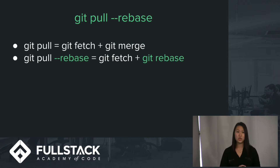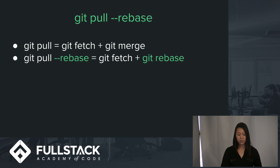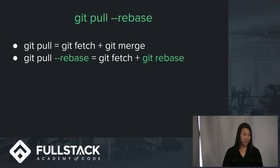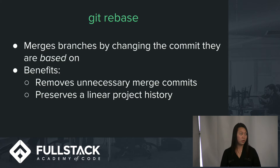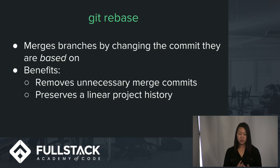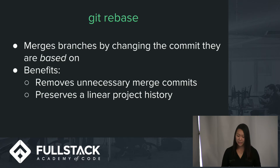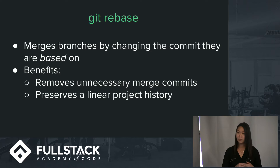When you do a `git pull`, it actually does two commands: `git fetch`, which downloads changes from another repository, and then `git merge` with your own branch. But if you use the rebase option, you do a `git fetch` plus a `git rebase`. Git rebase allows you to merge branches by changing the commit they were based on. Normally git does a merge commit under the hood, which can be numerous on a huge team, doesn't convey useful information, and litters the project history. Doing a rebase removes these unnecessary commits and preserves a linear project history.